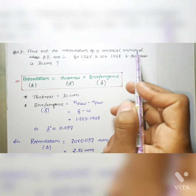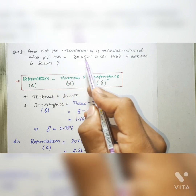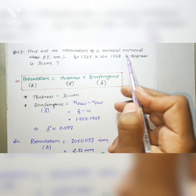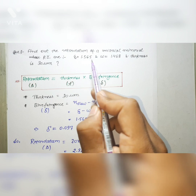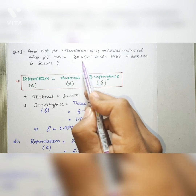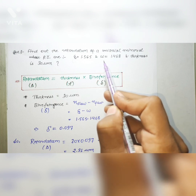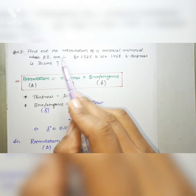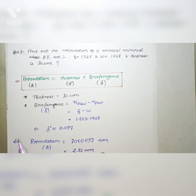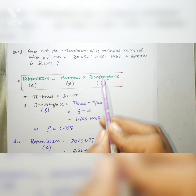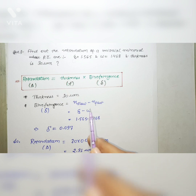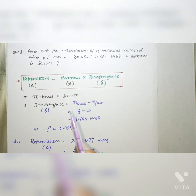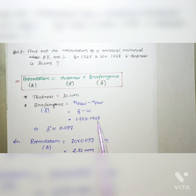The next question: find the retardation of a uniaxial mineral whose refractive indices are ε = 1.565 and ω = 1.468, and thickness is 30 micrometers. Here ε is the refractive index of the slow ray and ω is the refractive index of the fast ray. The formula for retardation is thickness × birefringence, where birefringence equals the refractive index of the slow ray minus the fast ray, i.e., ε − ω = 1.565 − 1.468 = 0.097.